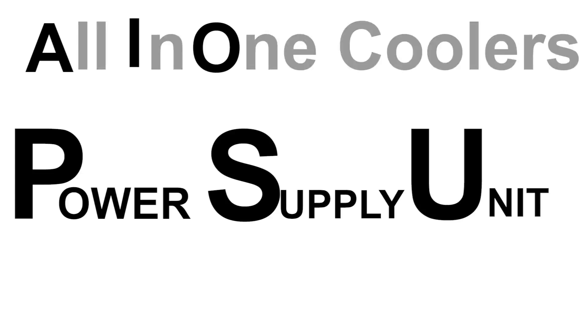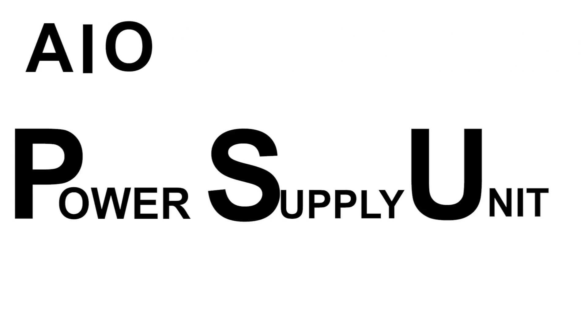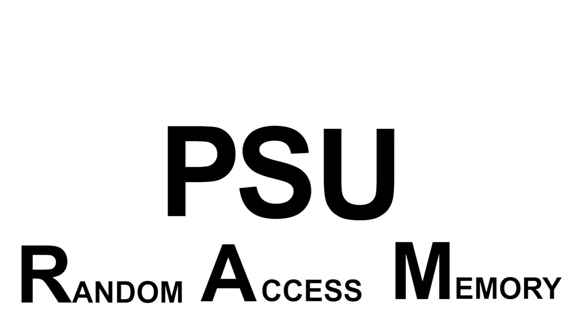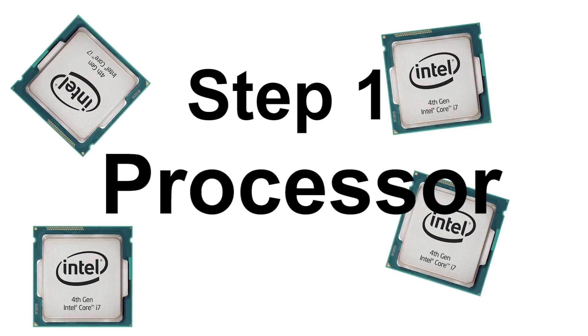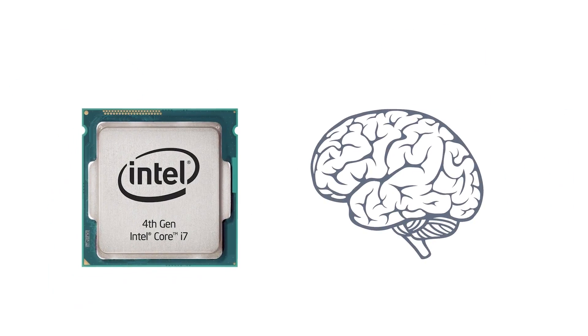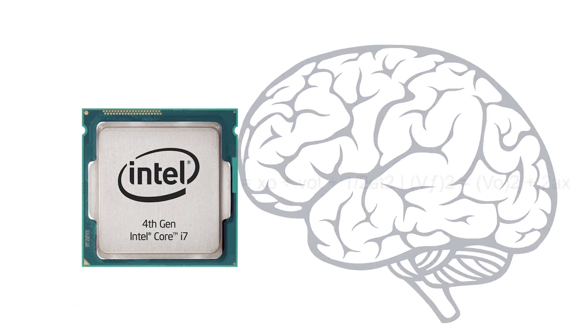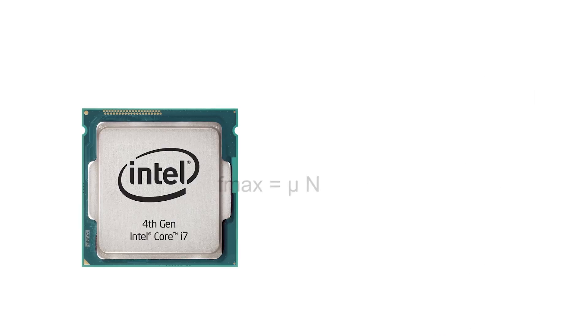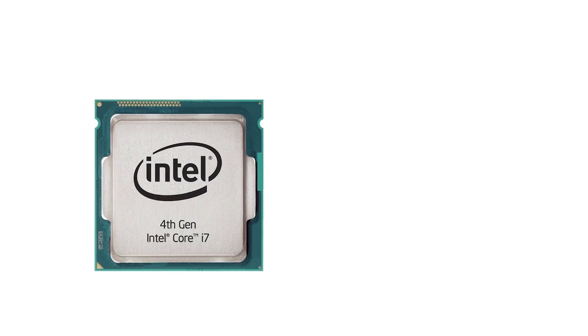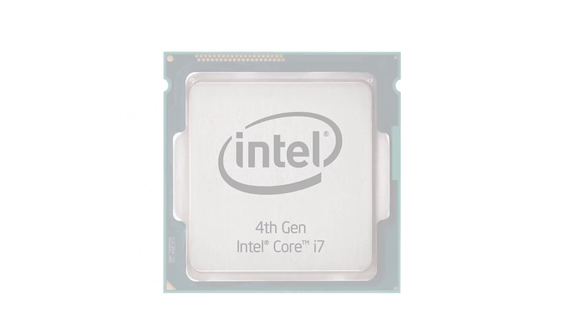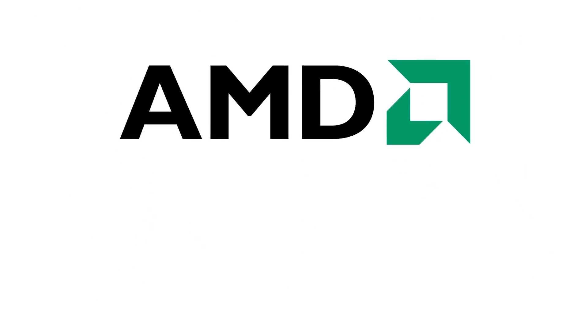There will be a lot of abbreviations so you will need to pay attention. Picking the parts — start by picking the processor, the brain of your PC. It does all the complicated calculations. I'm just going to talk about Intel as I'm not very familiar with AMD. So there are five main types.